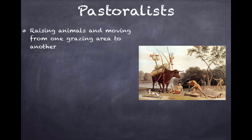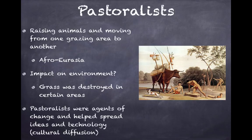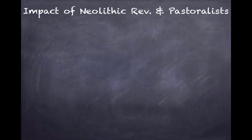Pastoralists were very important people — groups that raised animals and moved from one grazing area to another, constantly on the move, especially in Afro-Eurasia. Their impact on the environment included destroying grass in certain areas due to grazing. Pastoralists were also agents of change who helped spread ideas and technology — a key example of cultural diffusion — sharing weapons and technology across regions.